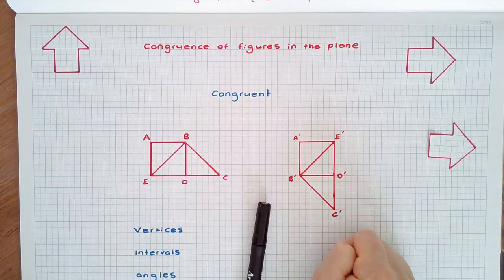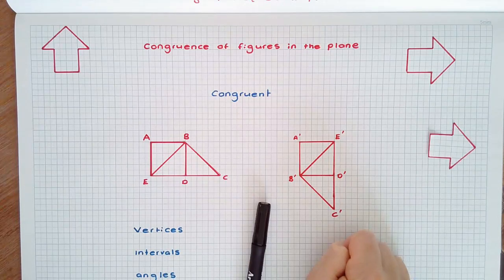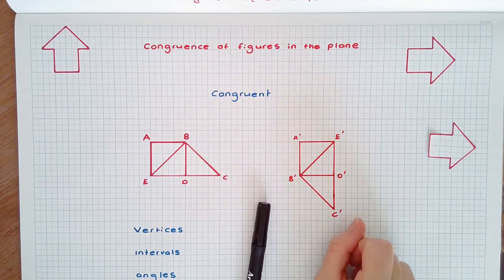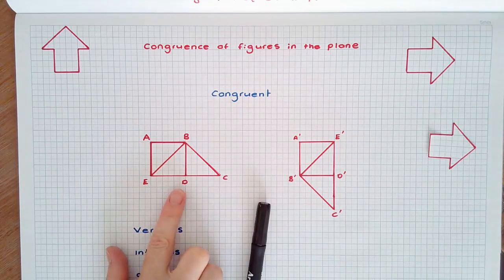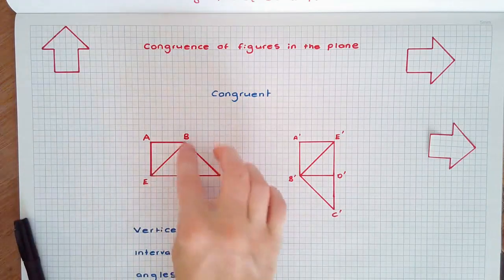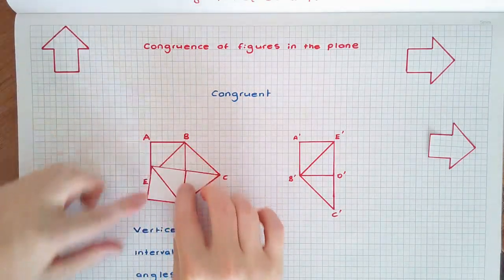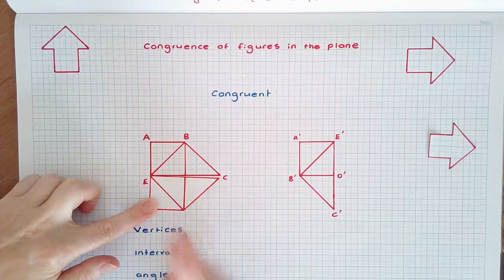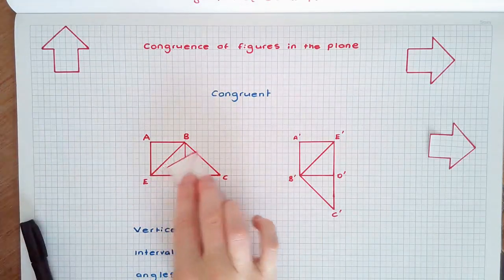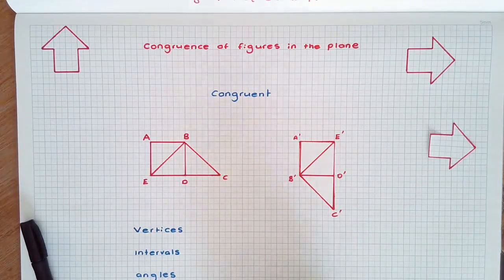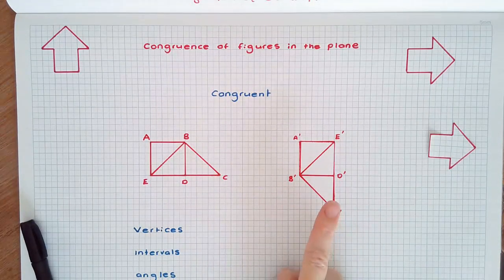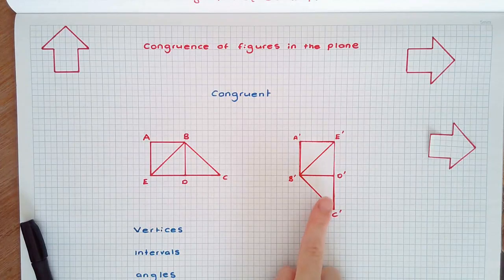When two figures are congruent, then paired intervals have the same length, paired angles have the same size, and paired regions have the same area. This figure could have been reflected downwards, rotated about a certain point clockwise and then translated horizontally or another combination of transformations to reach this transformed figure here.